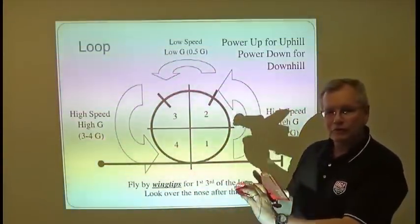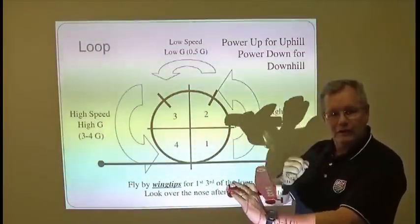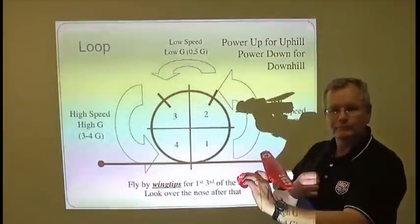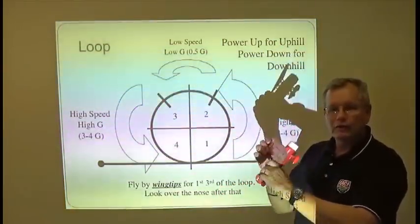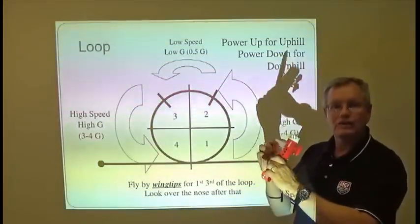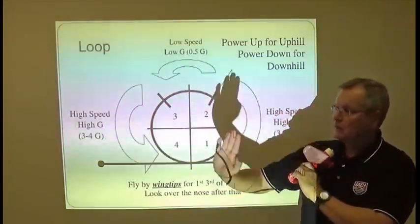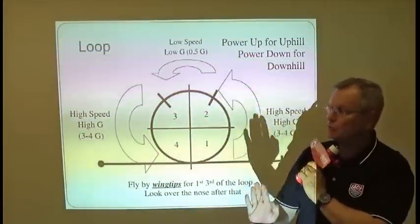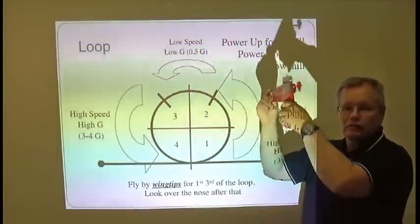Your primary flight control at this point is going to be your elevator because that's what's going to pull you around the loop. You're going to think of your rudder and your ailerons as trimming devices, trying to keep the airplane exactly on plane and keep this loop perfectly vertical as you go around.